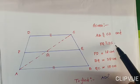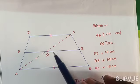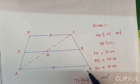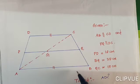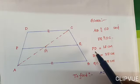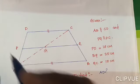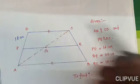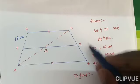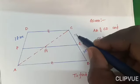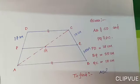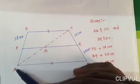PQ is parallel to DC. If it is parallel to DC, it is also parallel to AB because AB is already parallel to CD. So if CD is parallel to PQ, then PQ is also parallel to AB. Here, PD = 18 cm, BQ = 35 cm, and QC = 15 cm. They are asking us to find the length of AD.